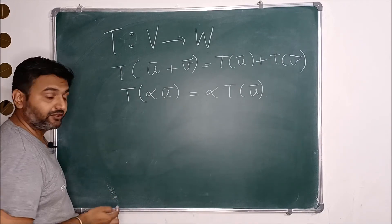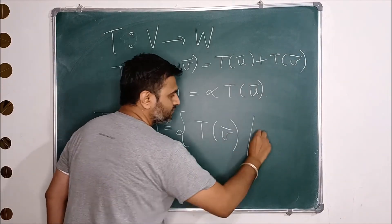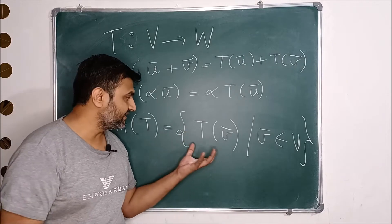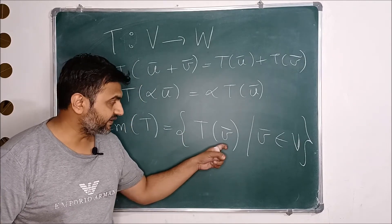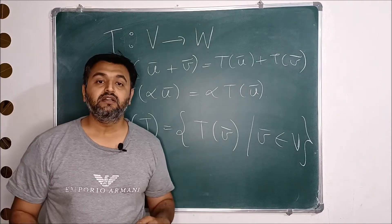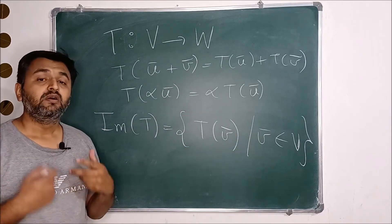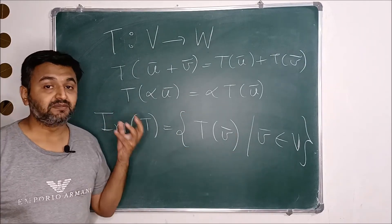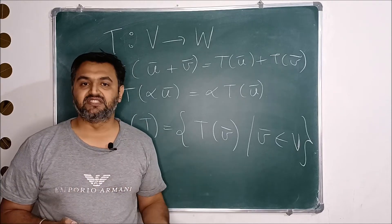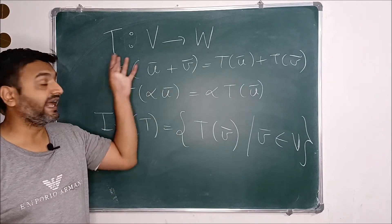Now, what is the image set of T? The image set of T is the collection of all images of vectors V under the map T — you keep changing the vector in the domain and look at all the images. This image set forms a subspace of W. And as soon as a subset forms a subspace, you can talk about the basis and dimension. In future lectures, we will see that the dimension of the image space is called the rank of a transformation.